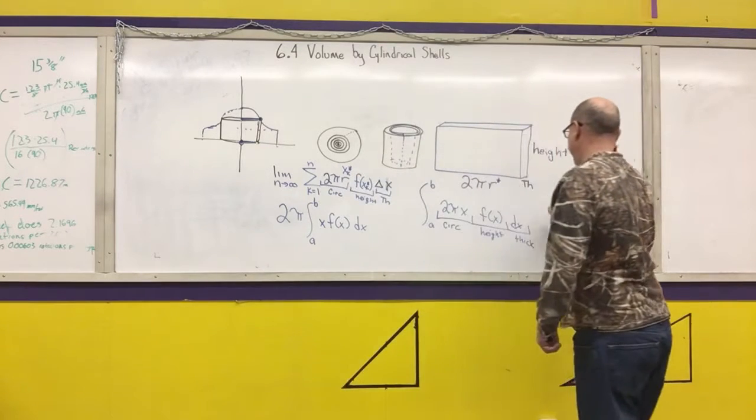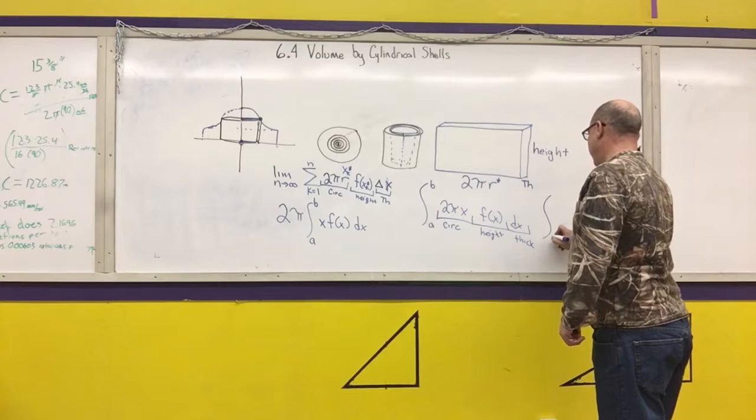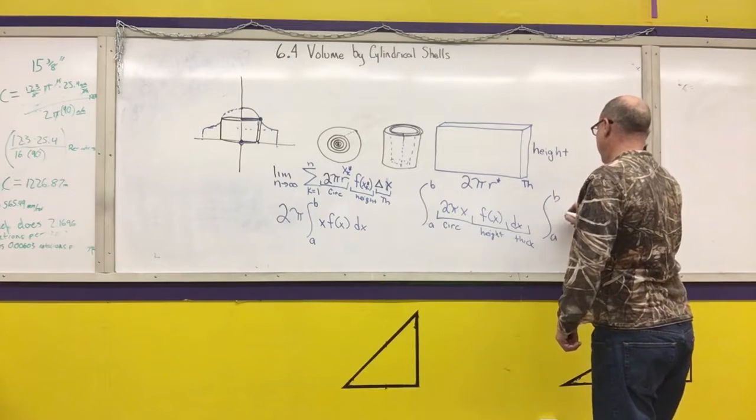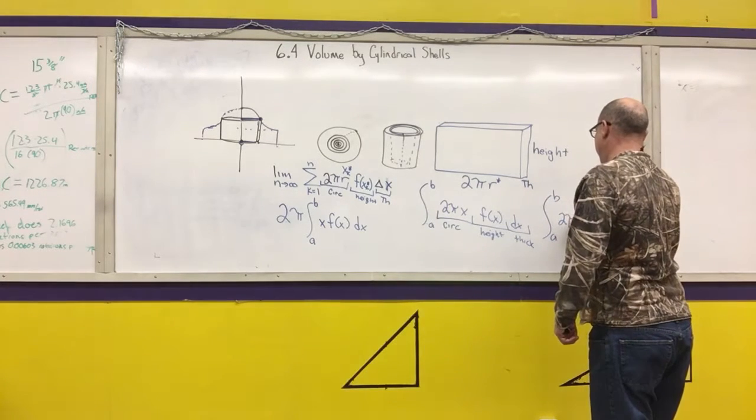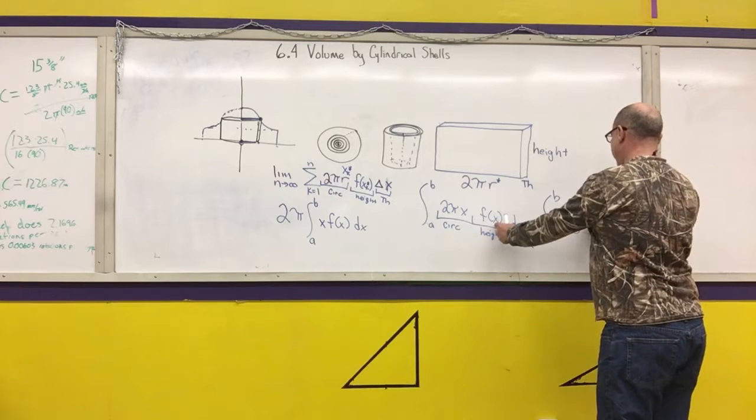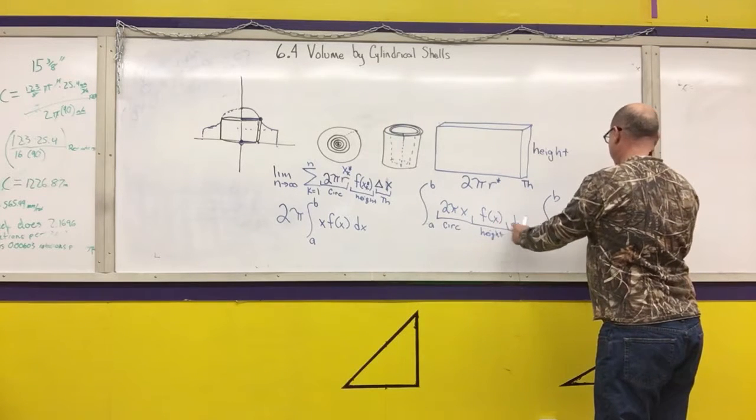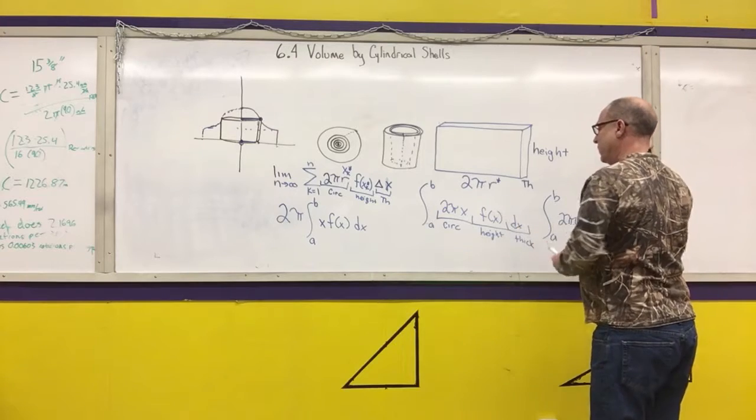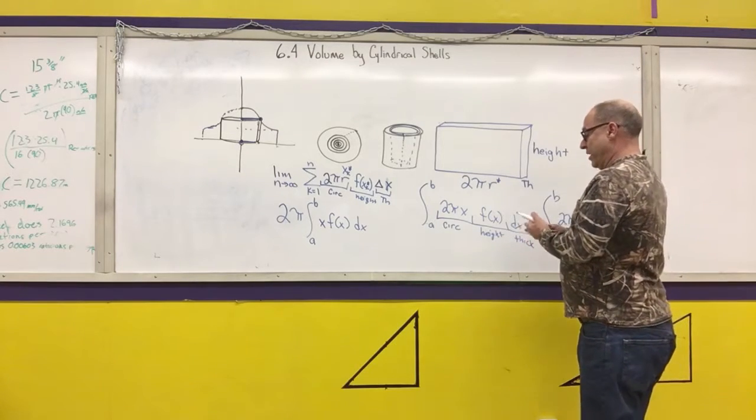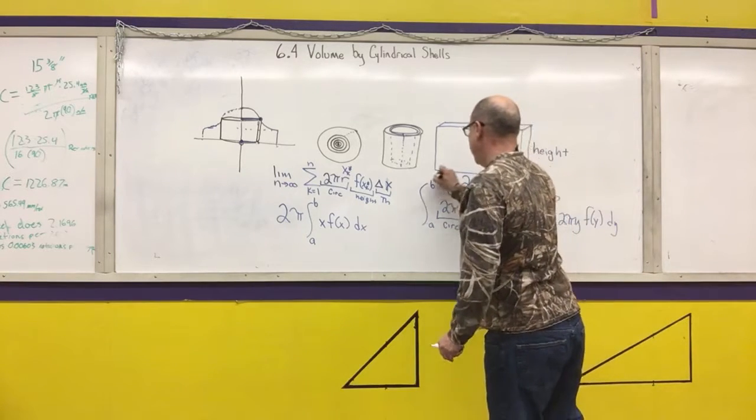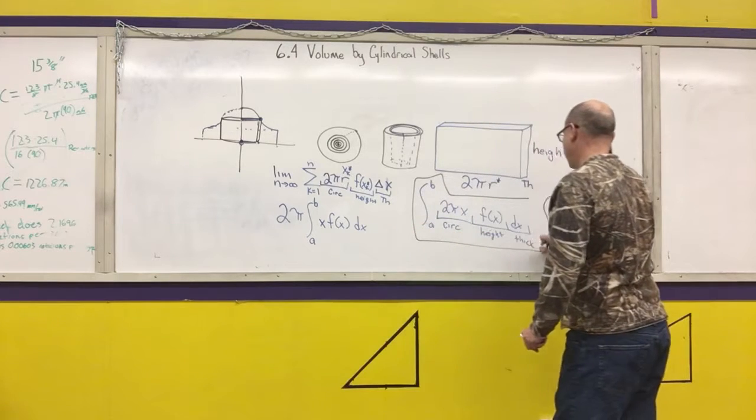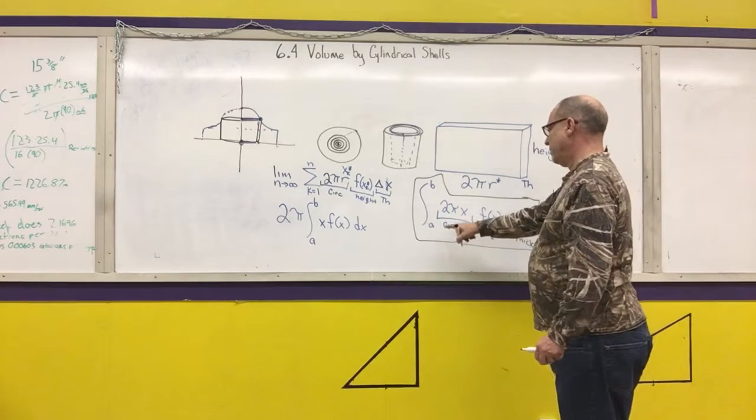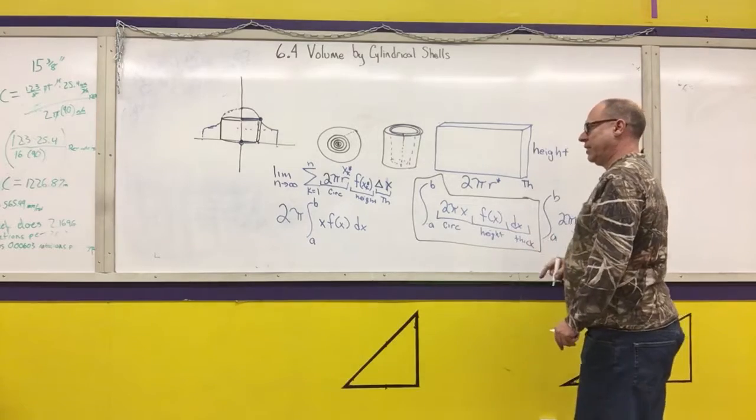Alternately, if it's around the y-axis, it would be the integral from a to b of 2 pi y, f of y, dy. My recommendation is you memorize this formula as it's the integral of the circumference times the height times the thickness.